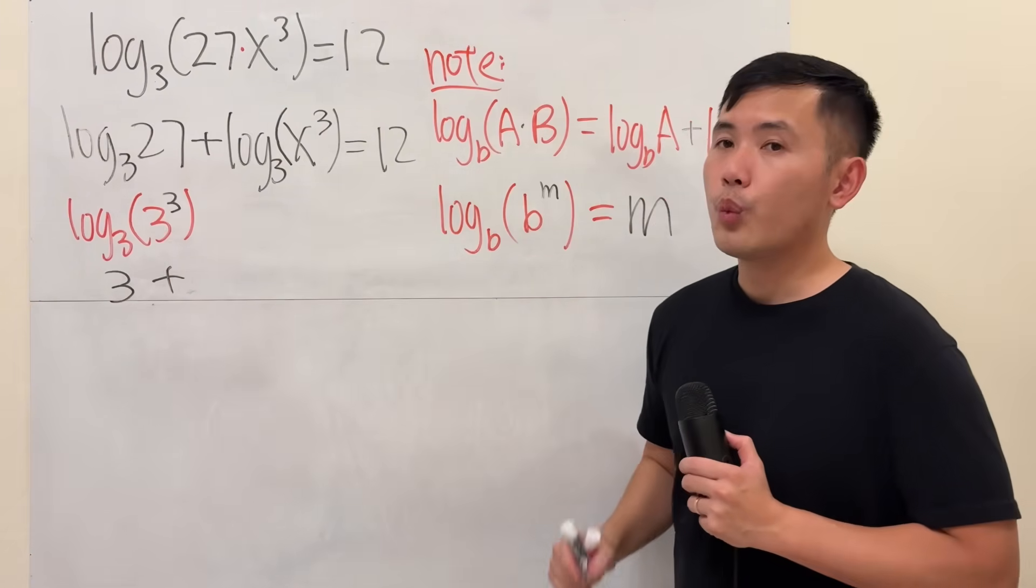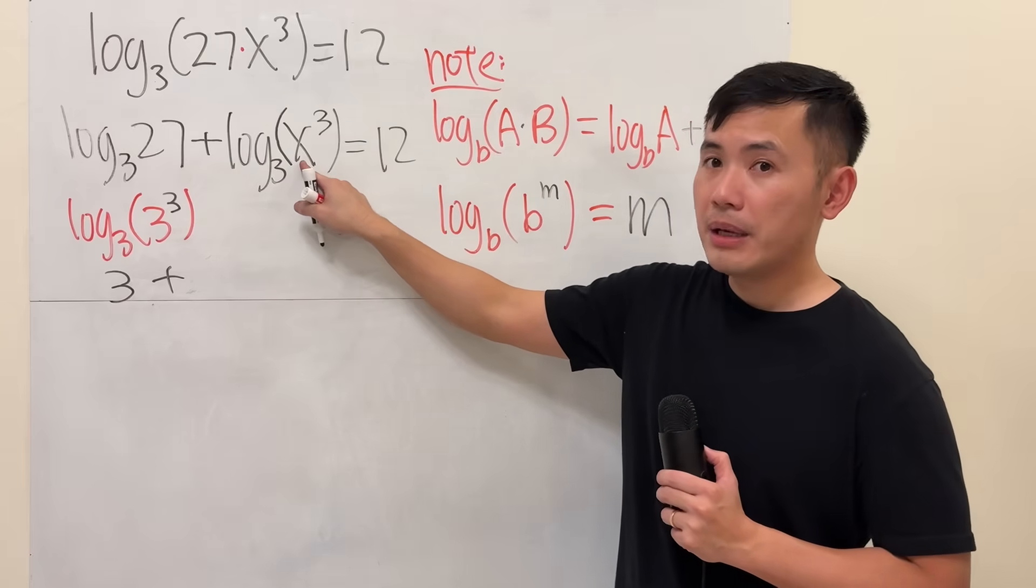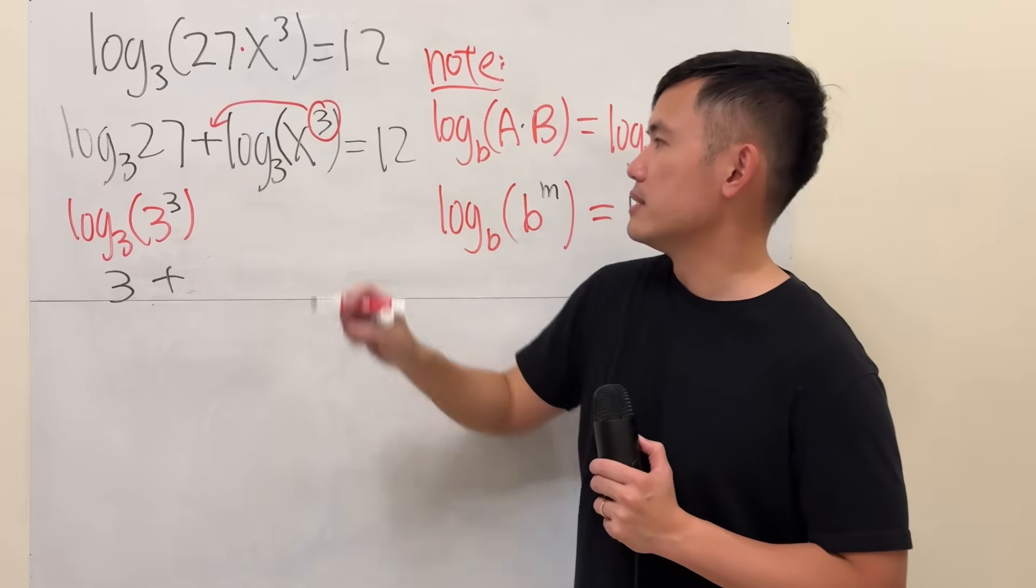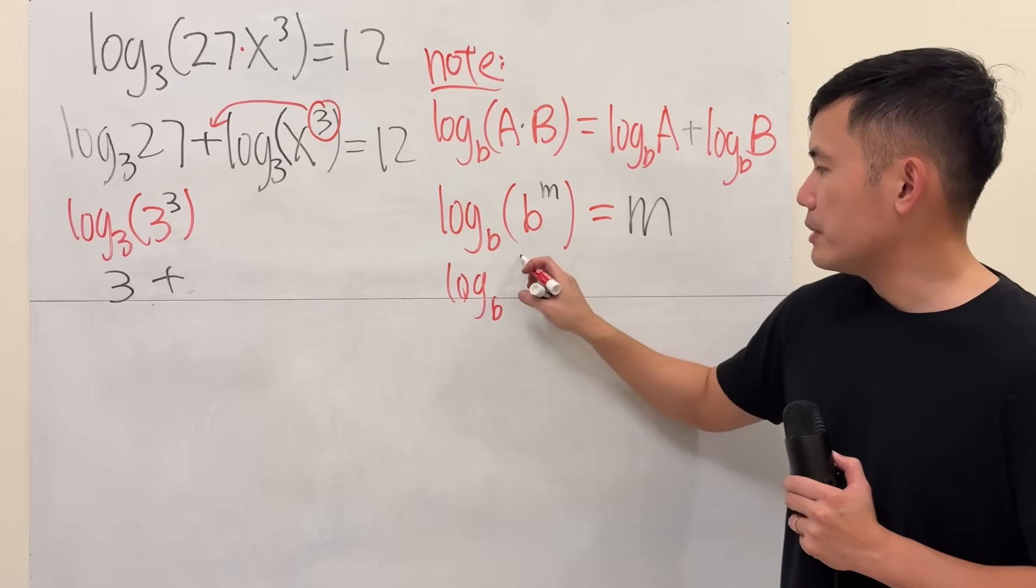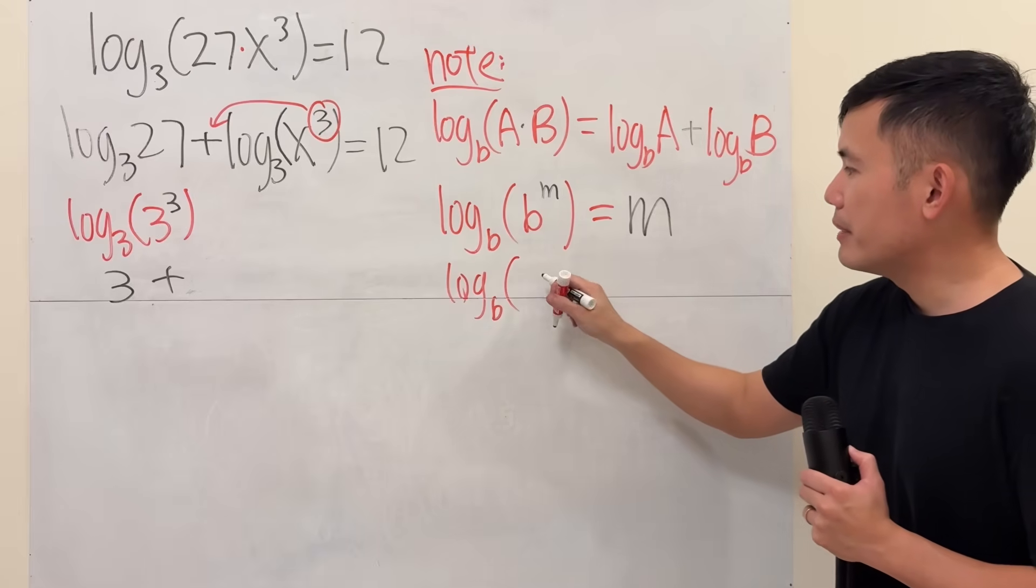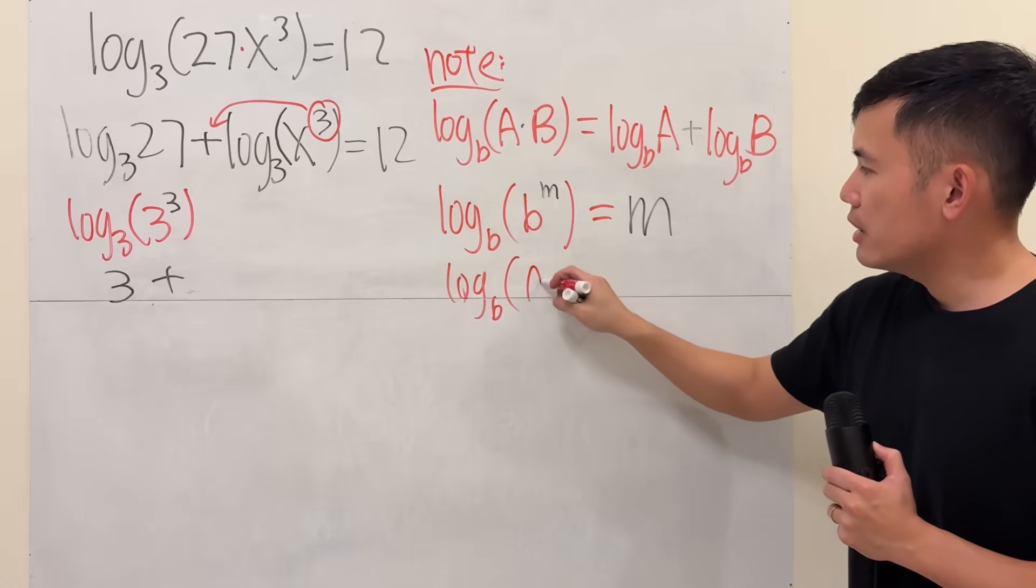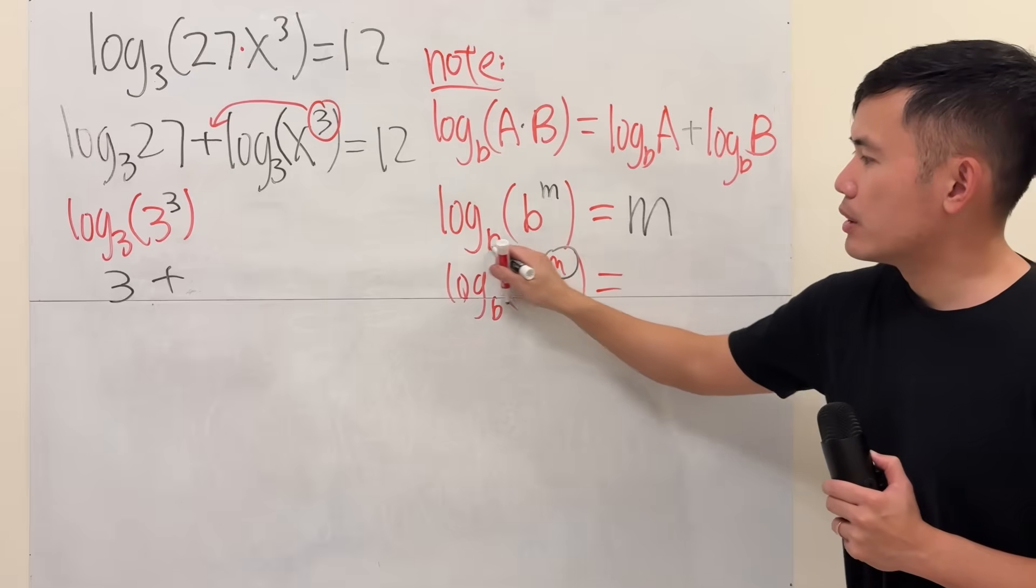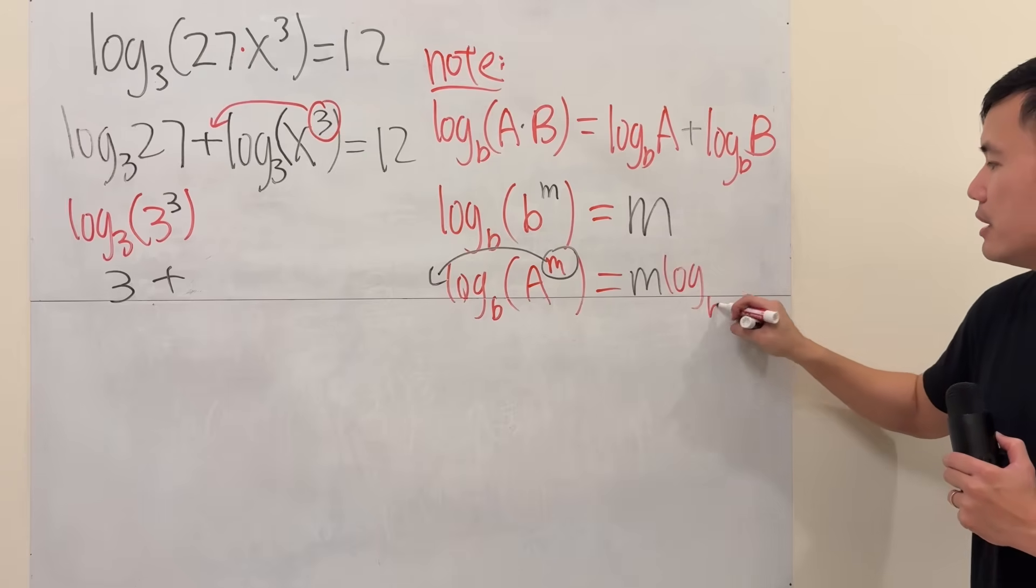Now we have this. What can we do next though? We cannot cancel because the base here is not the same as this base. What we can do is, we can put the power to the front. That's another property. When we have log with some base b, if the base are not the same, let's say we have some a to some power m, we can put the power to the front. So that becomes m times log base b of a.